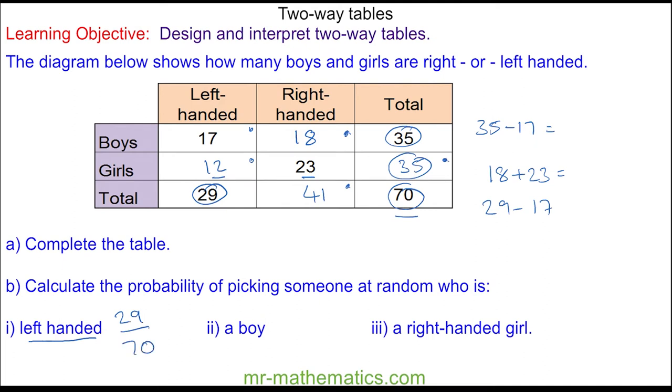For picking a boy, there are 35 boys out of 70 in total. We can simplify this fraction to make one half.